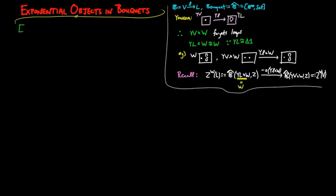Let's look at one example to see how to construct an exponential in the category of bouquets. Let W be a bouquet with two flowers, one with two petals and the other with none. And let Z be the bouquet with three flowers: the first with one petal, the second with two petals, and the third with none.